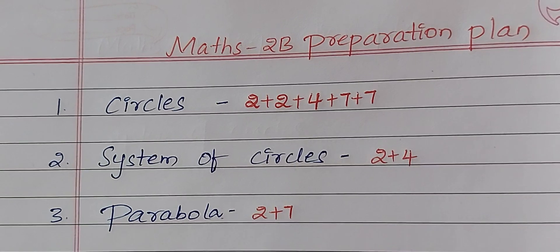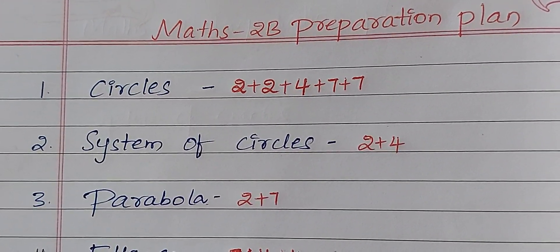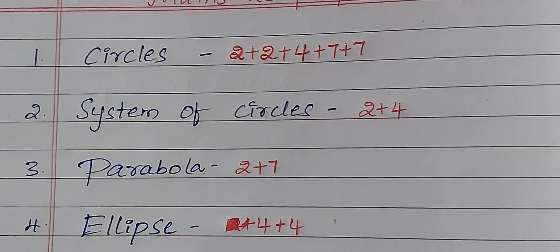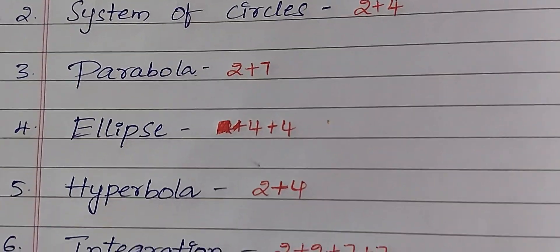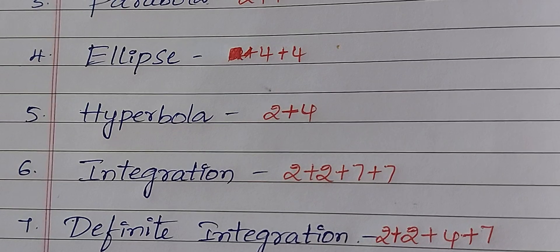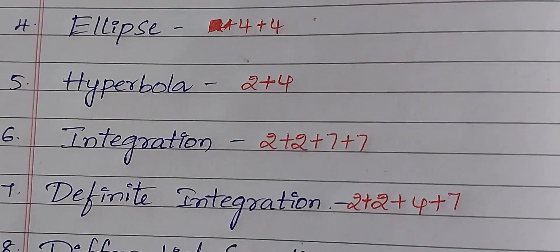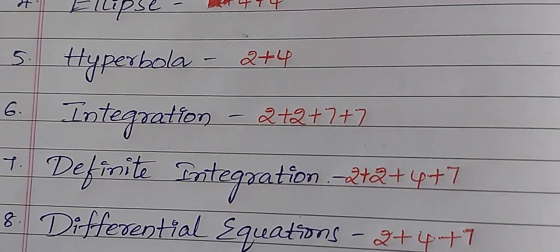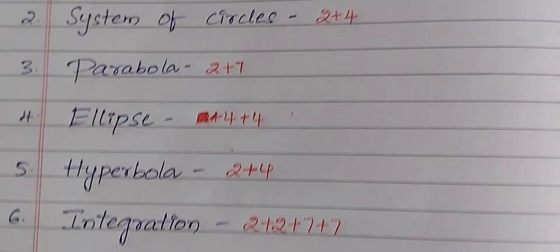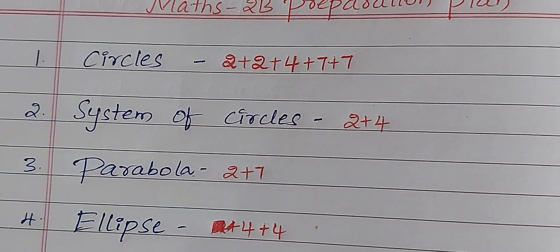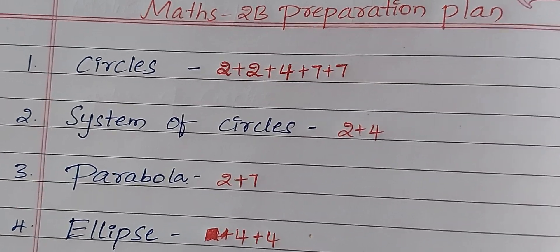See the blueprint first. First chapter is Circles: 2-mark questions, 4-mark questions, and 7-mark questions. Next, System of Circles 2-4, Parabola 2-7, Ellipse 4-4, Hyperbola 2-4. Integration: Indefinite integration 2-2, 7-7. Definite integration 2-2, 4-7. Differential equations 2-4-7. Highest weight is chapter 1: 2-2, 2-2, 4-7, 7-7.